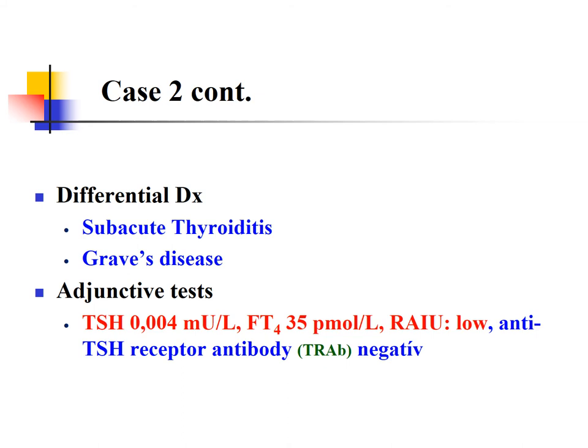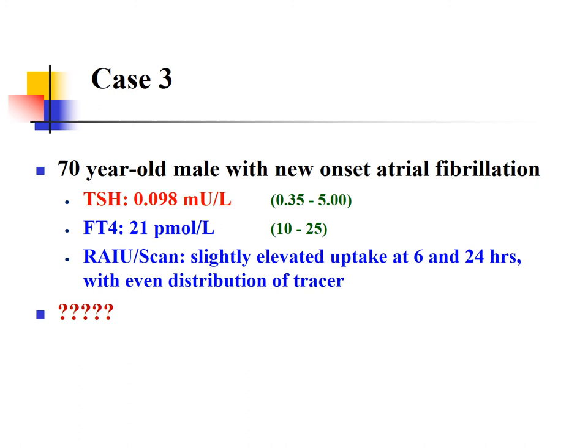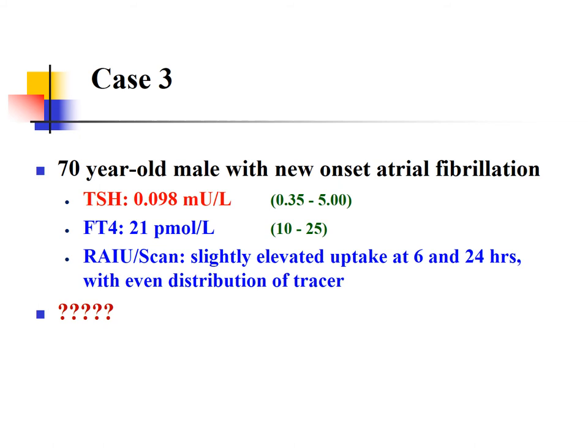The next case: a 70-year-old male with new onset atrial fibrillation. TSH is suppressed below normal, free T4 is in the normal range, and radioactive iodine scan shows slightly elevated uptake at 6 and 24 hours but not significantly advanced. The answer here is subclinical hyperthyroidism.